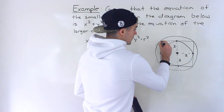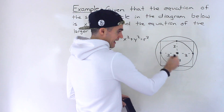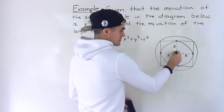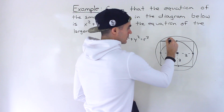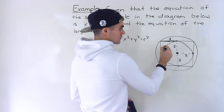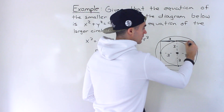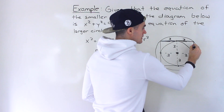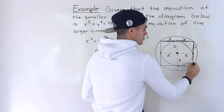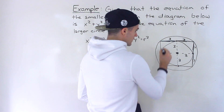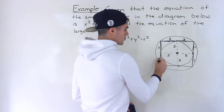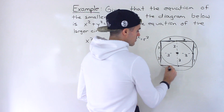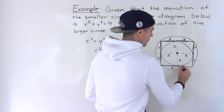Another thing we can get from the diagram: since the radius is 3, each half-side of the square is also 3. This length over here is 3, this length is 3, this length is 3, this is 3 — all of these smaller lengths of the square are 3. That's going to be important.